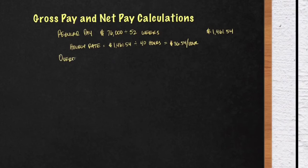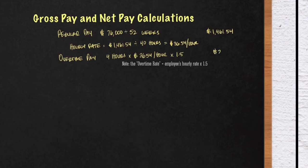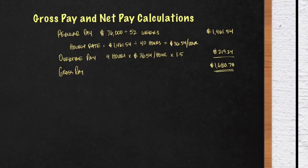Now we can calculate our overtime pay. Our overtime pay is four hours — the extra hours he worked over 40 hours in that one week — times his hourly rate of $36.54, times the overtime rate, which is time and a half or 1.5. You'll get $219.24. Together, regular pay combined with overtime pay gives you the gross pay: $1,461.54 plus $219.24 equals $1,680.78.